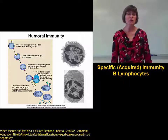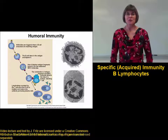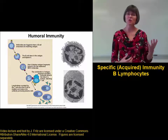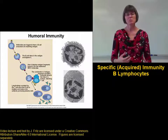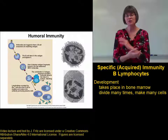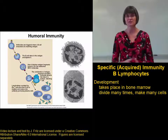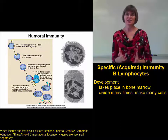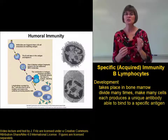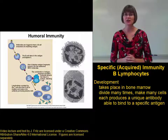Let's take a closer look at the humoral immunity provided by the B lymphocytes. When we consider B cell development, it's actually very similar to what we saw with T cell development. B cells begin in the bone marrow, but they don't migrate anywhere else. They divide there in the bone marrow during development to make a whole lot of B cells. Each of those B cells then develops its own unique randomly generated antibody that it shows on the surface of its cell.